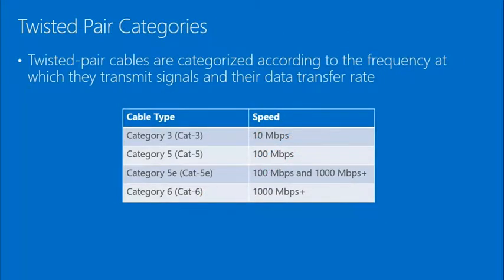There are different categories of twisted pair cable, which rate the speed that can go over that category. Category 3 supports 10 megabits per second. Cat 5 supports 100 megabits per second. Cat 6 supports 1,000 megabits per second or more. You may have heard or will hear the terms cat 5, cat 3 in the future.